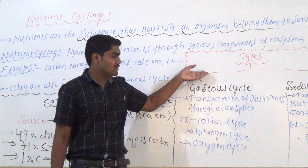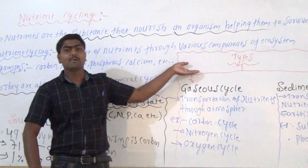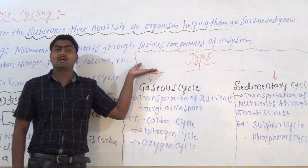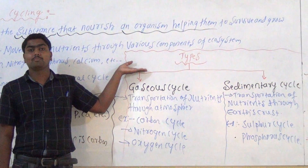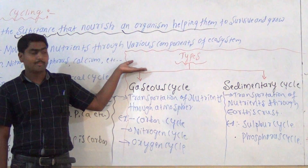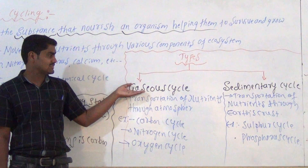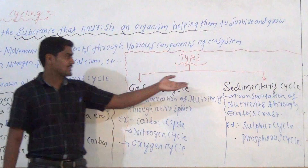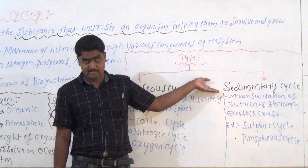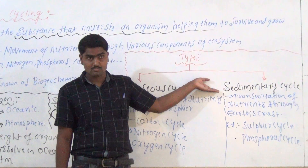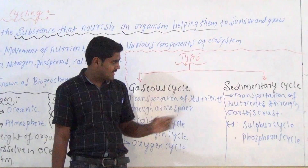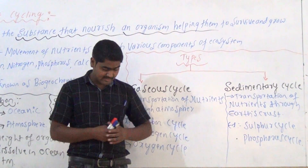In the nutrient cycle, every type of nutrient cycle is important. At a universal level, there are two types of nutrient cycles. The first one is called the gaseous cycle, and the second one is called the sedimentary cycle.